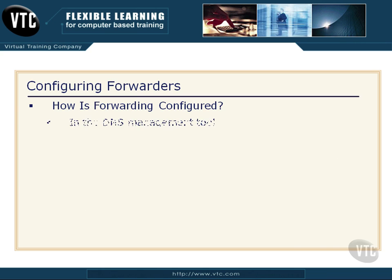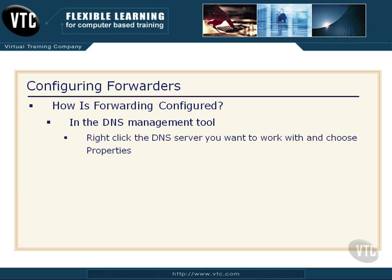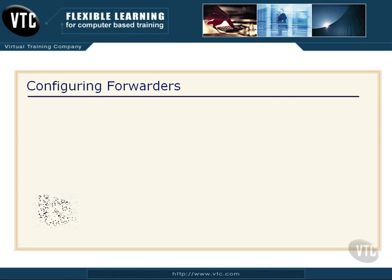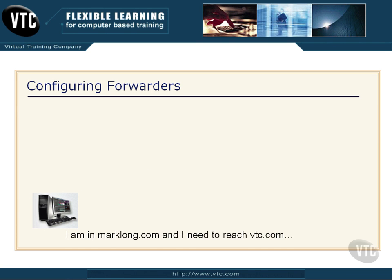So how do we configure this? In the DNS management tool, you can right-click the DNS server that you want to work with and choose Properties, then choose the Forwarders tab. Now let's look at forwarding in action, then I'll go out to the tool and show it to you.